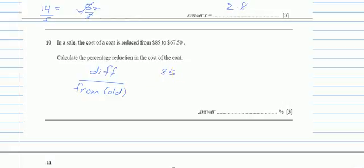It's 85 minus 67.5, and from it was 85. Times this by 100 to get the percentage, which will be: 85 minus 67.5 over 85, and I get 20.588. To 3 significant figures it will be 20.6%.